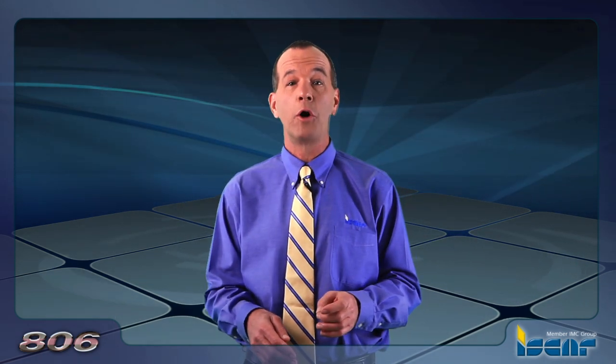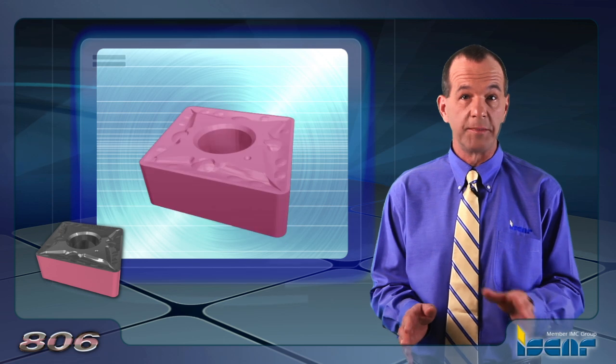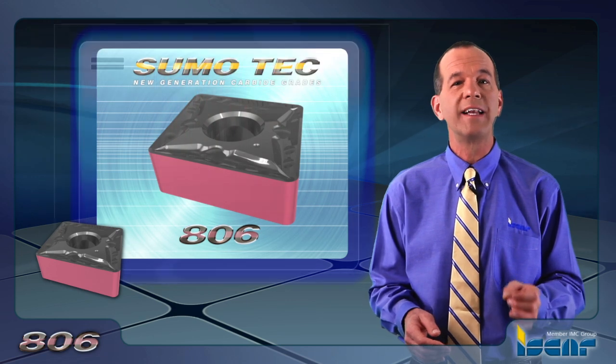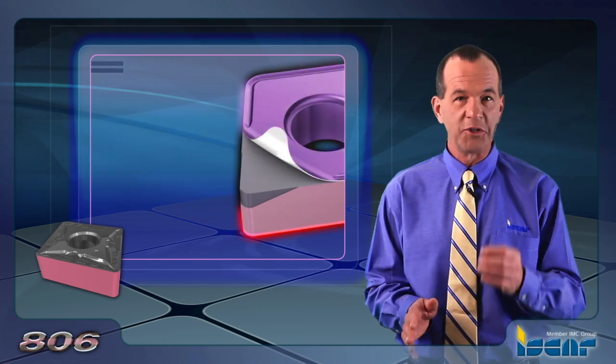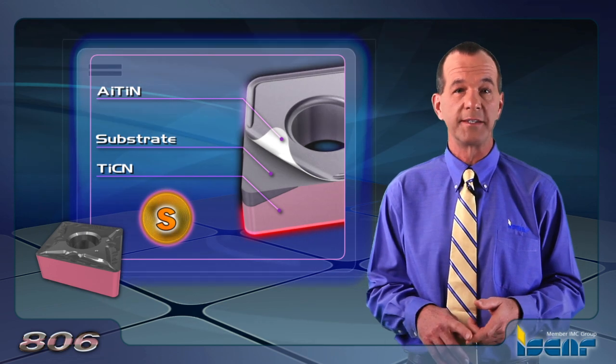IC806 is a new PVD coated grade for turning and grooving high-temperature alloys, which provides substantially improved tool life and better reliability. The substrate has a very hard sub-micron grain size. Iskar's new SumoTech PVD coating improves toughness and flaking and chipping resistance.